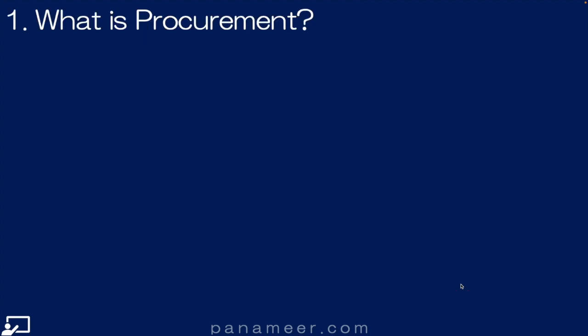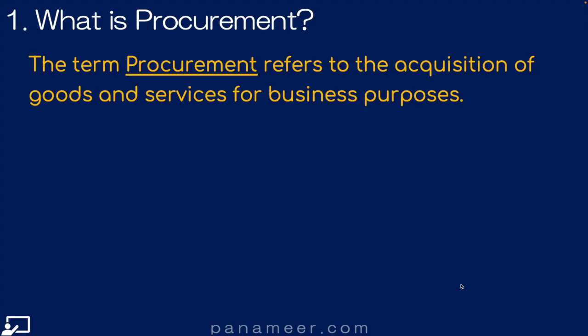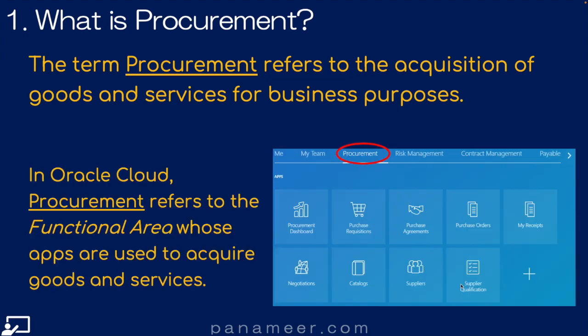Slide 1: What is procurement? The term procurement refers to the acquisition of goods and services for business purposes. In Oracle Cloud, procurement refers to the functional area whose apps are used to acquire goods and services. Click the link above to watch a quick video explaining how Oracle organizes all of its applications.